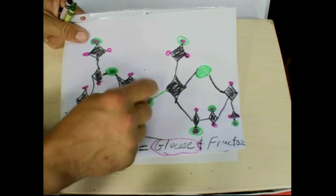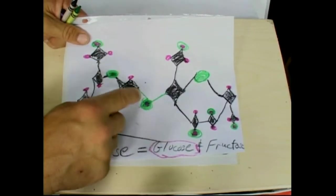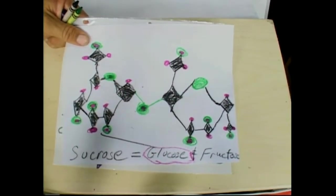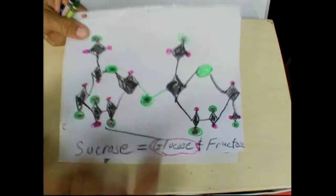And then there's different ways that this bonds. Like if one's going up and it does a beta instead of an alpha, then you get cellulose. We don't have an enzyme to break that up.